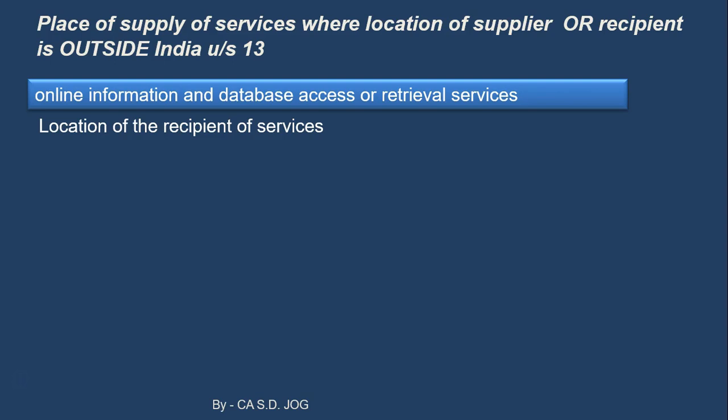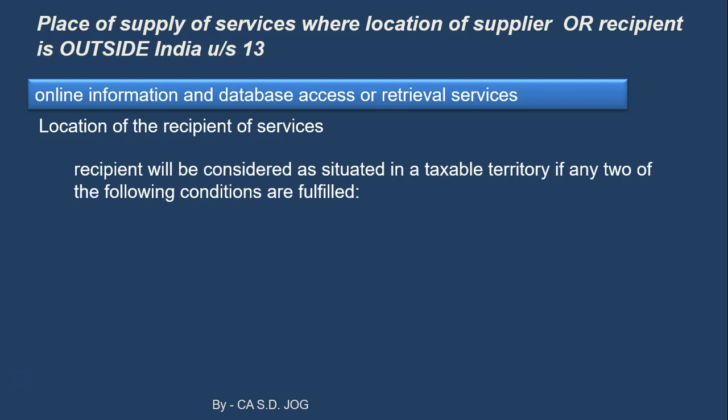In this online or digital world, how do you determine the location of the recipient of services? The law states there are various different categories to identify this. The recipient will be considered as situated in taxable territory — India — if any two of the following conditions are fulfilled. So it is not actual physical presence; out of the following conditions, if two are satisfied, then it is deemed that you are situated in India. Condition one: address of recipient in taxable territory. Say Mr. A is from Mumbai, and as per the records of the supplier of services, the address of Mr. A is of Mumbai — that is taxable territory.